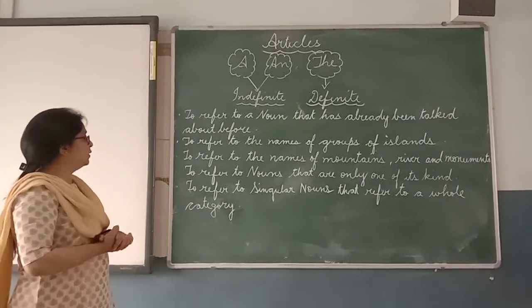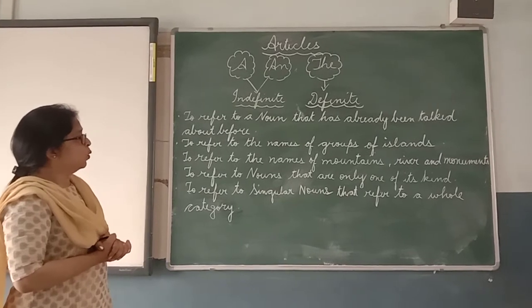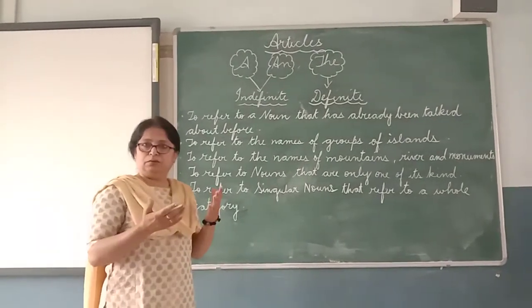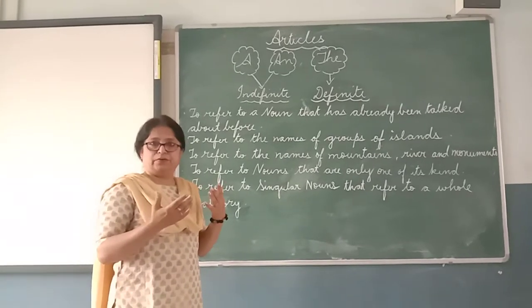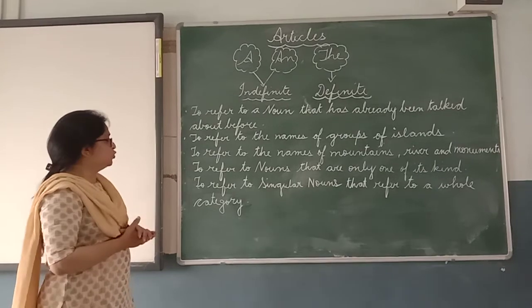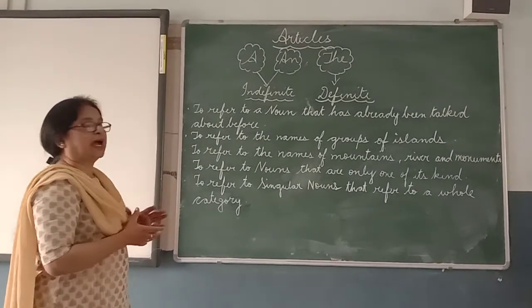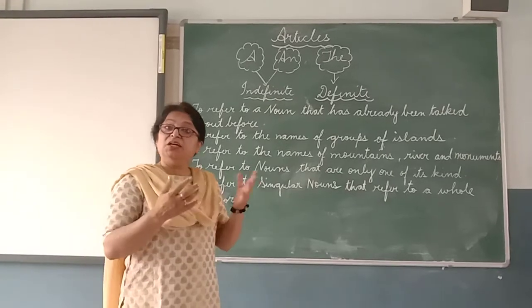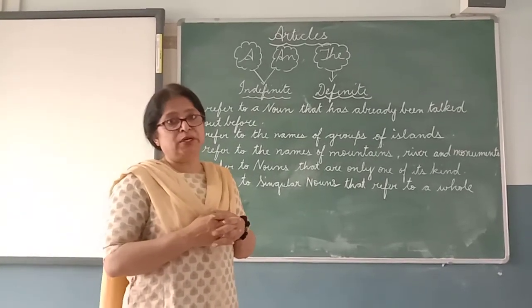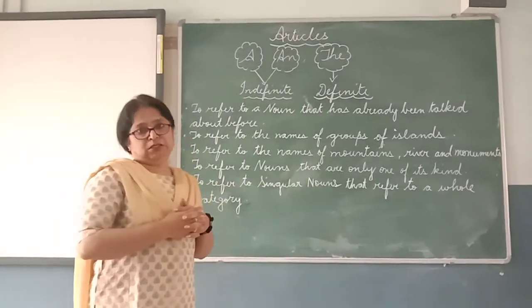The article 'The' is used to refer to nouns that are only one of their kind — the Moon, the Sun. It is also used to refer to singular nouns that represent a whole category, for example, 'The lion is the king of the jungle.' So you have to keep in mind these uses of the article 'The'.